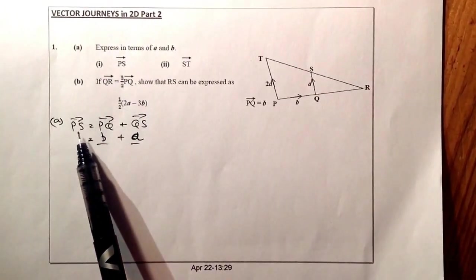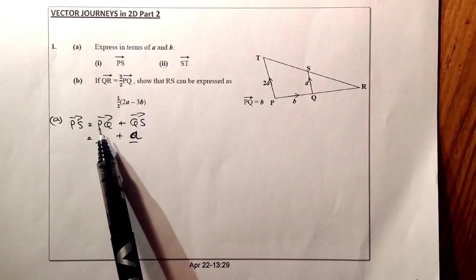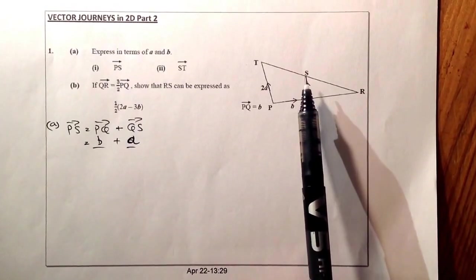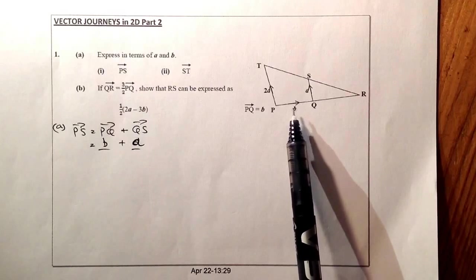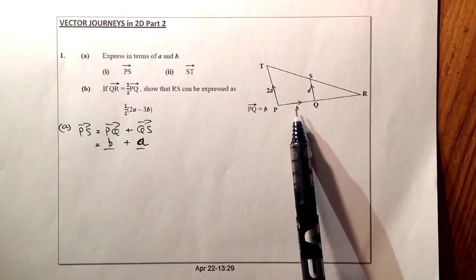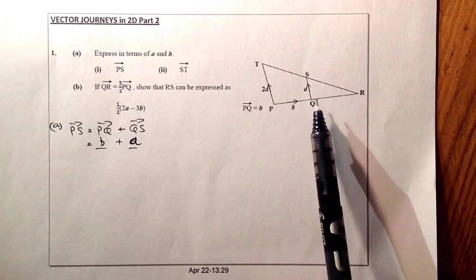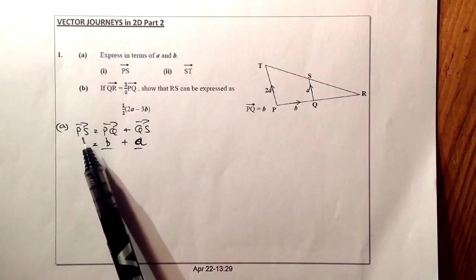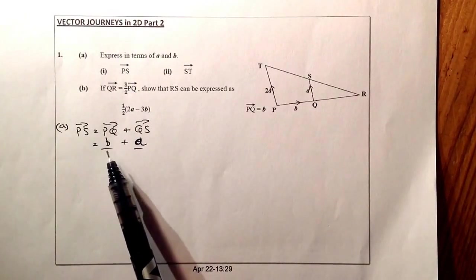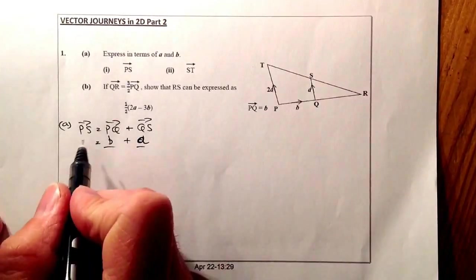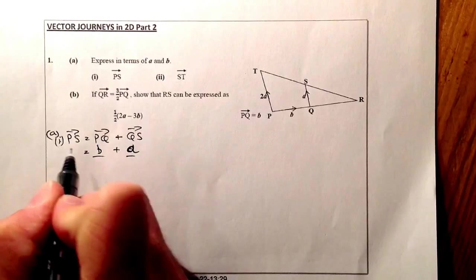So what I've started with here is P to S as a vector would be PQ plus QS, and then substituting in the vectors that I've been given, that's B, the vector B for PQ, and the vector A for Q to S. So the answer there for vector PS is B plus A. Right, let's go for part two of this question.